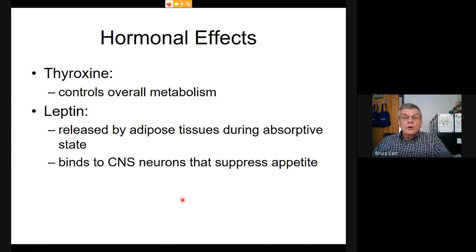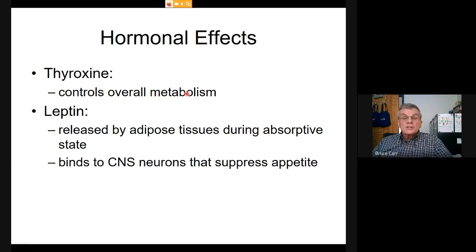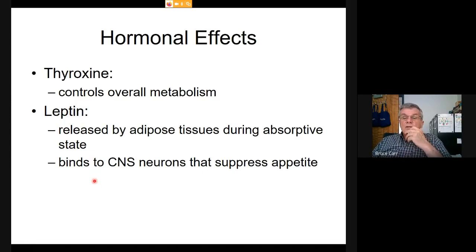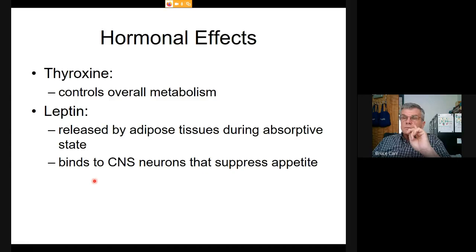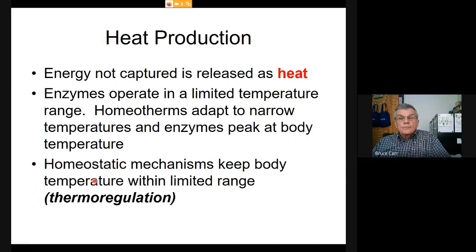Hormones are important here. Thyroxin from the thyroid gland has a general rate effect: adequate thyroid and you burn nutrients efficiently; inadequate thyroid and you feel tired and lack energy. Leptin is from adipose tissue. Released during the absorptive state, it binds receptors in the central nervous system and suppresses appetite—it's important in controlling our impulses to feed.